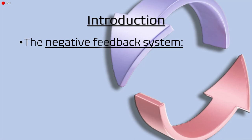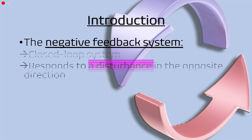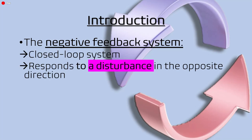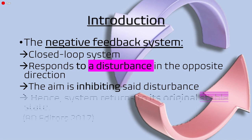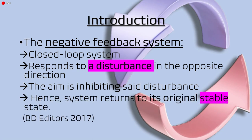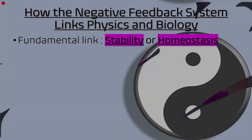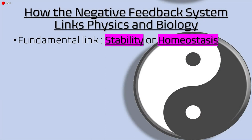For our arts and science project we will be focusing on the negative feedback system. The negative feedback system is a closed loop system which responds to a disturbance in the opposite direction — a disturbance that disrupts a certain equilibrium. The consequence of this negative feedback system is inhibiting said disturbance, therefore the system attempts to return to its original stable state.